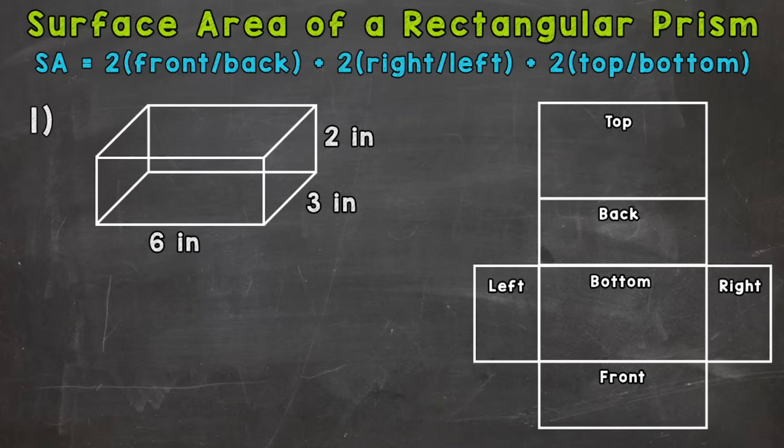we are going to use that formula there in order to find the surface area of a rectangular prism. So surface area equals 2 times front or back plus 2 times right or left plus 2 times top or bottom. So let's talk about what that means.